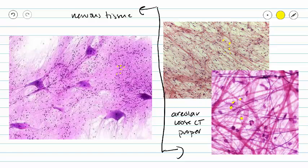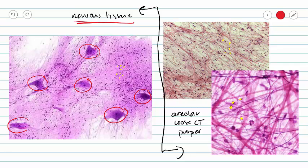probably because of the fibroblasts and fibrocytes that we have scattered throughout our areolar tissue and the neuroglia that we have scattered throughout our nervous tissue. However, when you see nervous tissue, you will always see cell bodies in your frame of view.